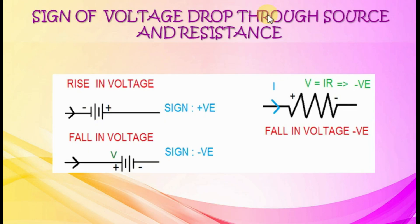Sign of voltage drop through source and resistance. A rise in voltage means current is flowing from negative to positive. Fall in voltage means current flows from positive to negative.